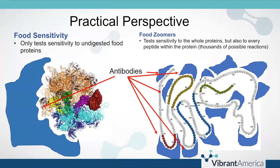With food sensitivity testing, there is one big globular protein for each food and the antibody for that is very specific. But with the food zoomers, we've taken that big protein and broken it down into its unraveled chain, testing for all the snippets along that chain. Antibodies to anything in that protein can detect reactivity, whereas food sensitivity tests only test reactivity to an undigested food protein. Food zoomers test the entire spectrum of possible reactivity and won't miss something essentially.